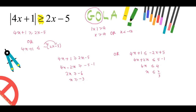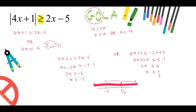Solving the second inequality gives x less than or equal to 2 over 3. For the final answer, the value of x lies in the union of x greater than or equal to minus 3 or x less than or equal to 2 over 3. Using a real number line, we can see that x is all real numbers, since all values are satisfied for this absolute inequality.